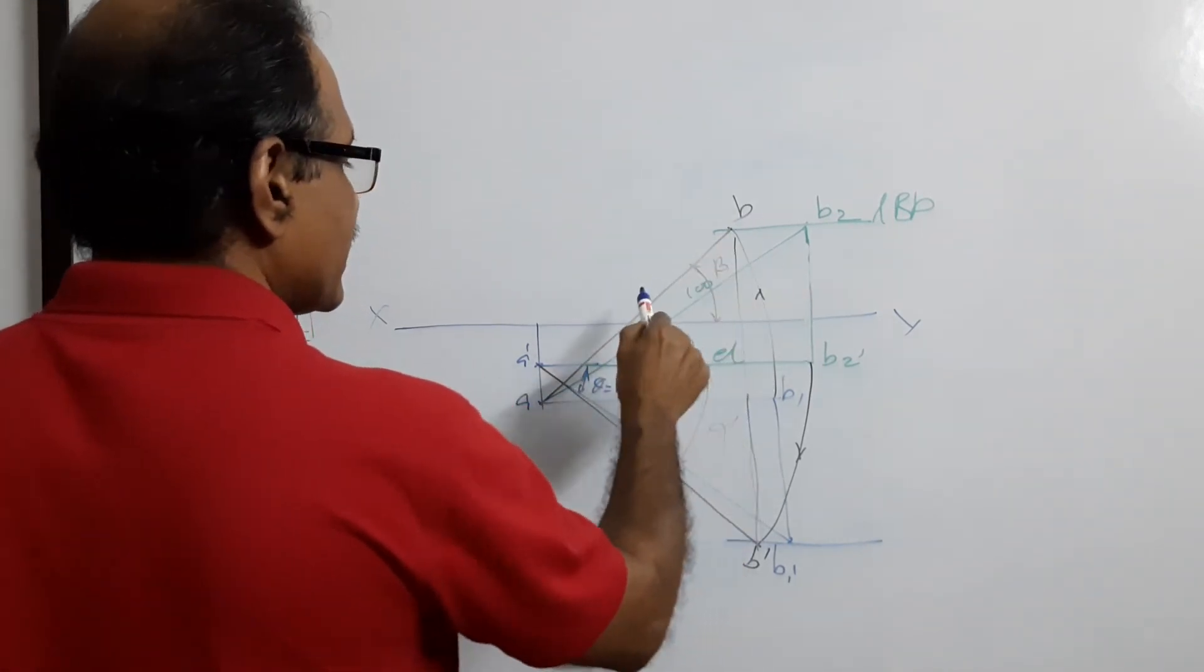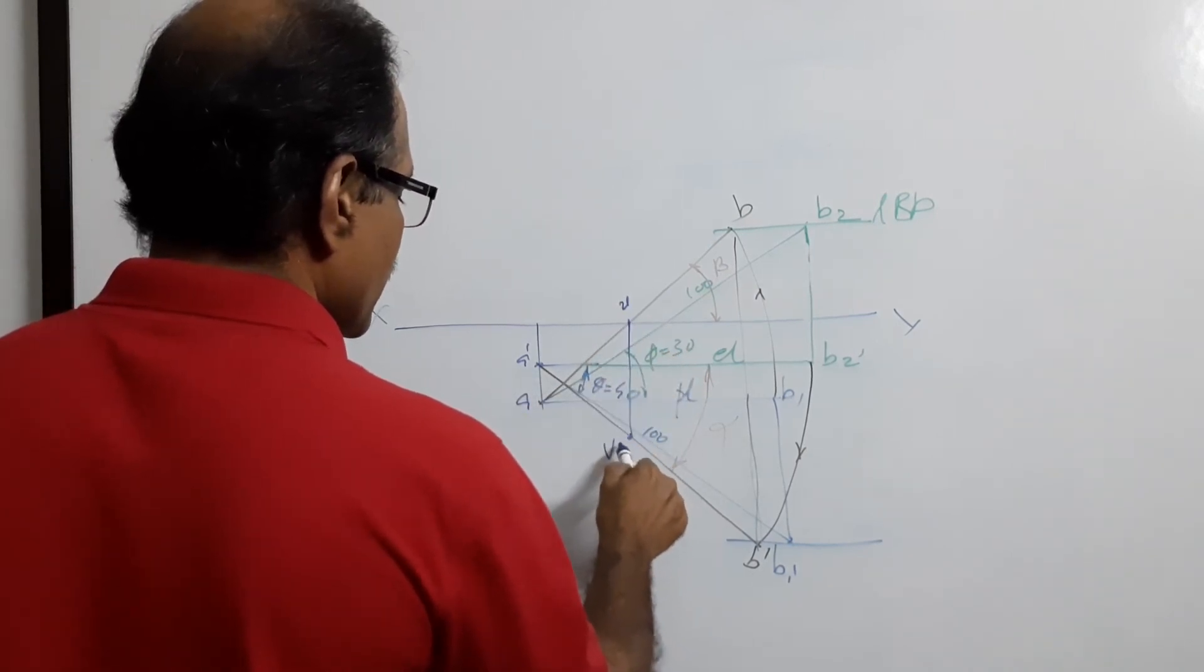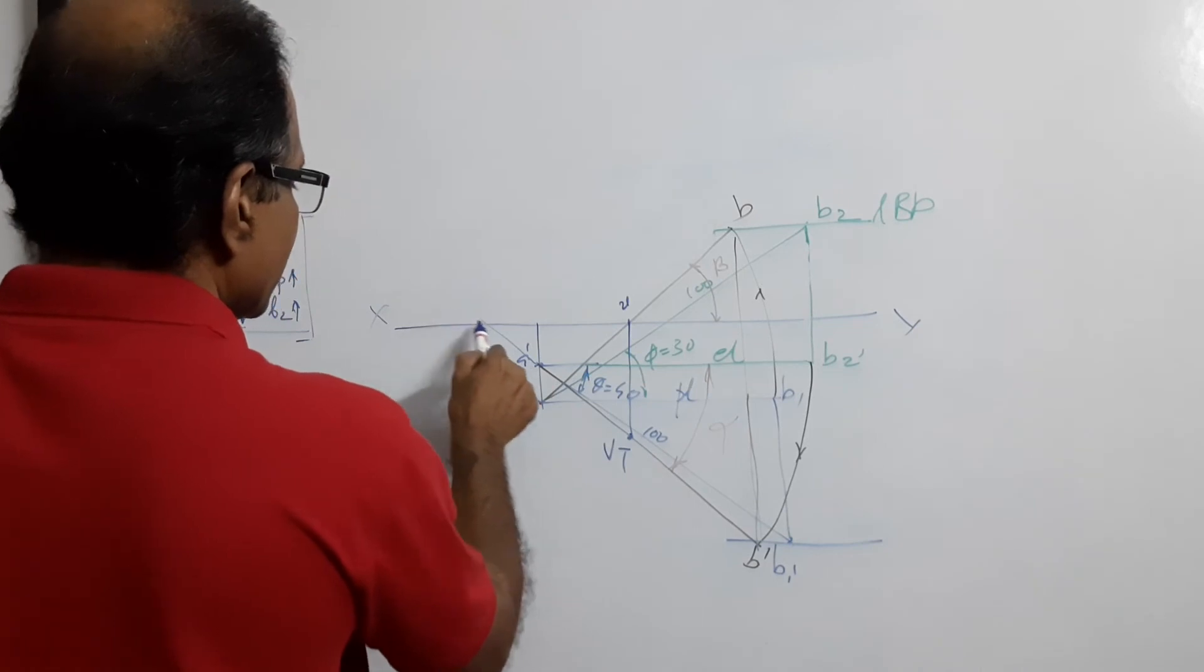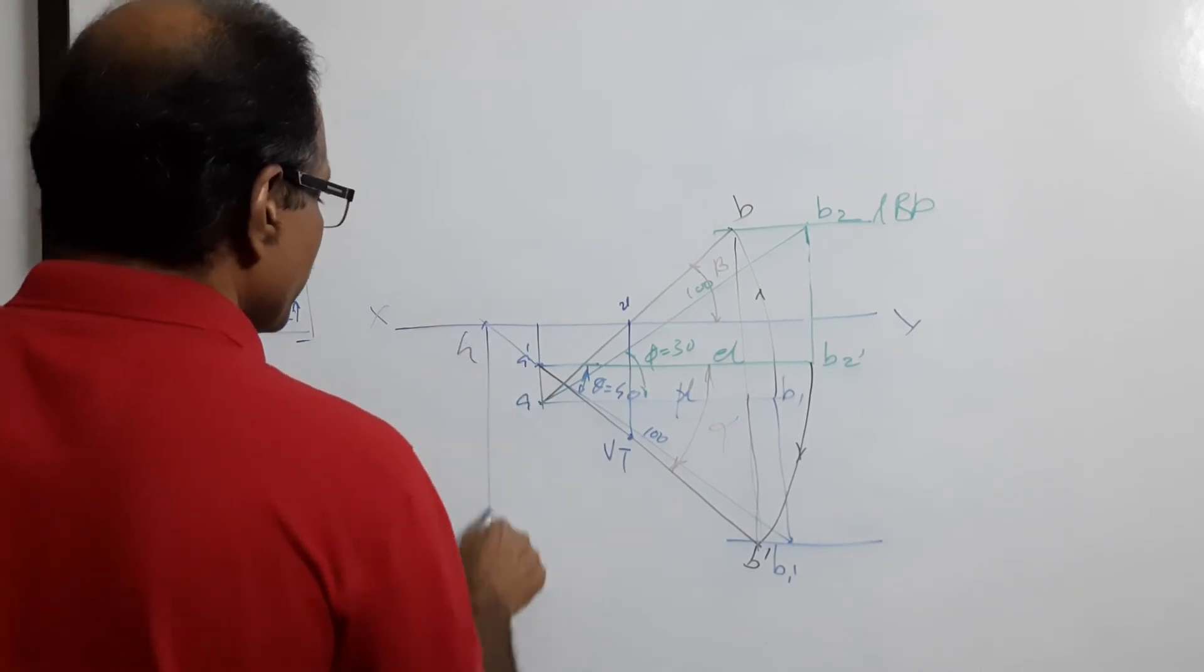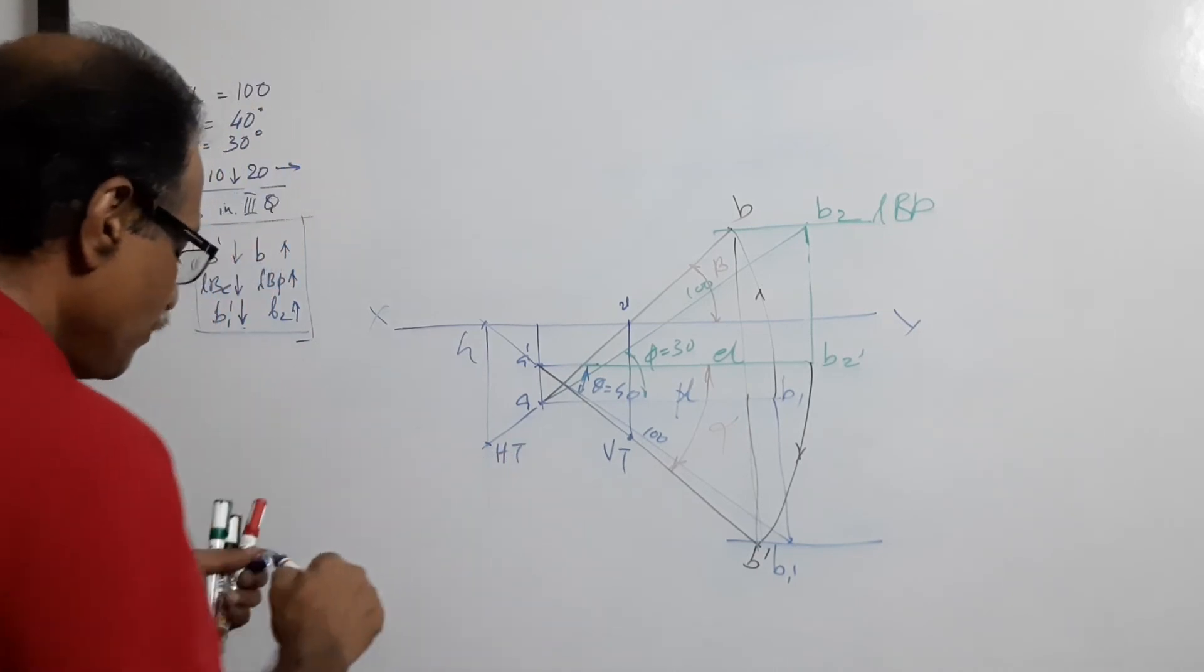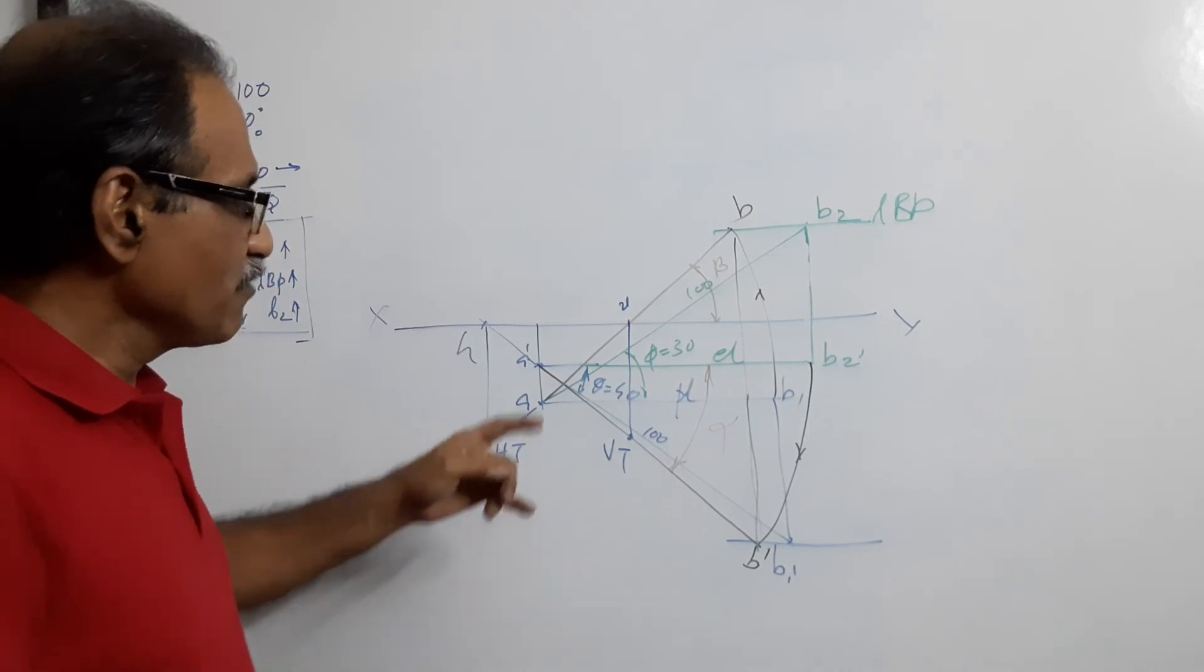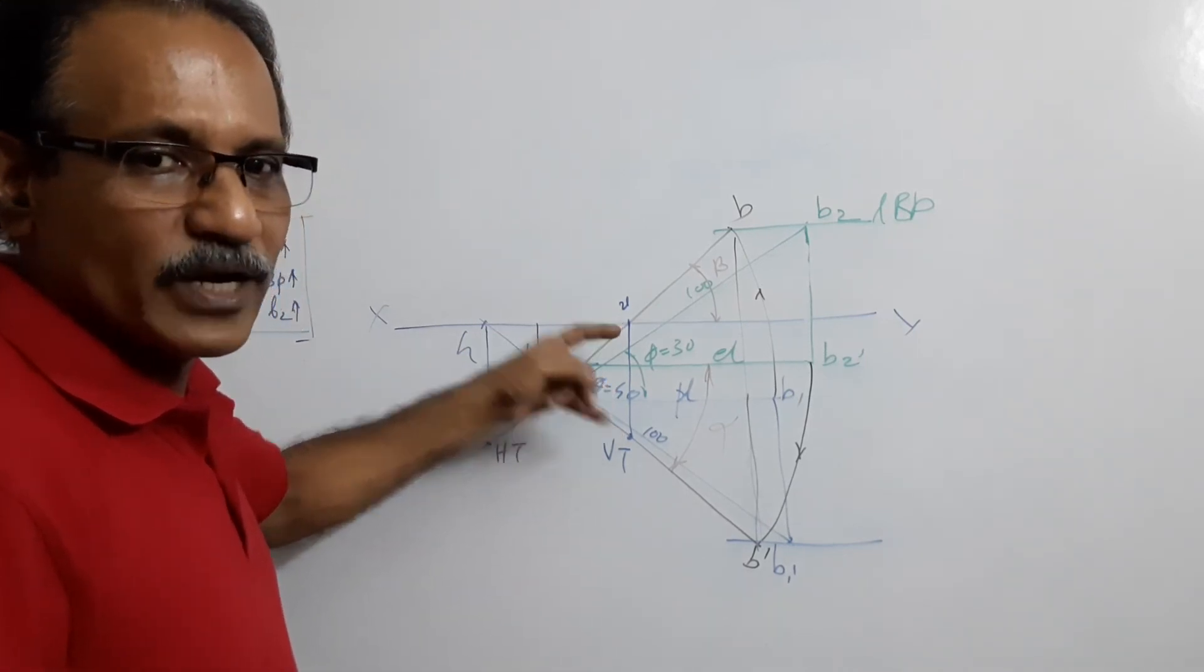Now about the traces: plan cuts XY at V. Elevation cuts XY at H. Drop a vertical through H, extend the plan HT. HT is this much distance in front of VP. VT is this much distance below HP.